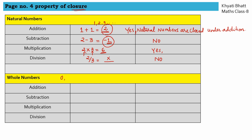Now whole numbers: 0, 1, 2, 3 and so on — they do not have any negative numbers. For addition: 0 plus 1 equals 1, both are whole numbers and the answer is a whole number, so yes, whole numbers are closed under addition. For subtraction: 2 minus 3 gives minus 1, which is not a whole number, so no. For multiplication: 4 times 0 equals 0, which is a whole number, so yes. For division: 2 by 3 gives a fraction or decimal, so whole numbers are not closed under division.